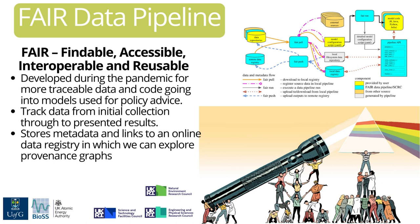Lots of teams came together from across the UK, from academia and industry, and they developed a FAIR data pipeline which tracks data through from the initial collection or production of the data, through whatever modelling or analysis pipeline we're using, right down to the presented results back to policymakers. The data pipeline stores lots of metadata about these different data products and code runs, and links to an online data registry where we can explore the provenance of these outputs.